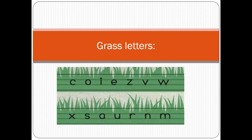Grass letters are those letters that are written exactly between the two middle lines. See there — there are four lines: one, two, three, four. And the grass letters will be written between the two middle lines. For example: C, O, I, E, V, W, X, S, O, U, R, N, M.